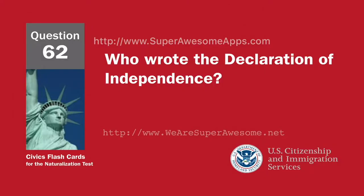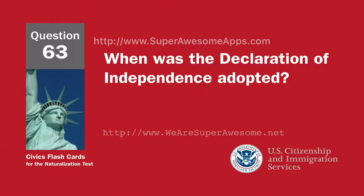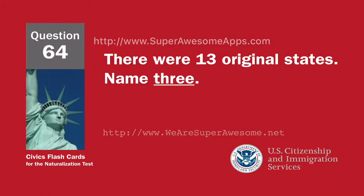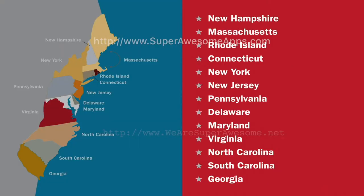Who wrote the Declaration of Independence? Thomas Jefferson. When was the Declaration of Independence adopted? July 4th, 1776. There were 13 original states. Name three. New Hampshire. Rhode Island. Connecticut. New York. New Jersey. Pennsylvania. Delaware. Maryland. Virginia. North Carolina. South Carolina. Georgia.